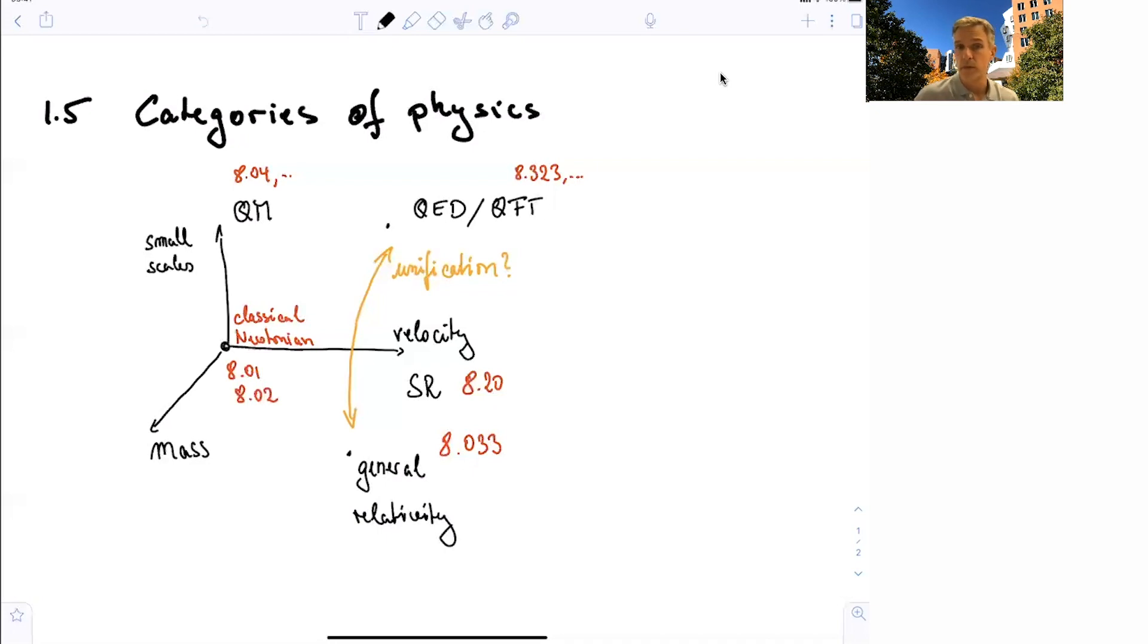And if you, for example, combine high velocities and small scales, you have to study quantum field theories. So the point of this slide is really to point out that special relativity has a specific use case. It's limited. It describes fast-moving objects. It doesn't describe large accelerations, for example. So that is the generalization you get when you study general relativity.